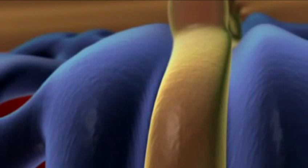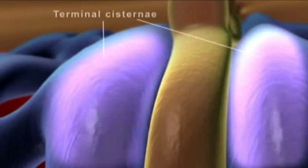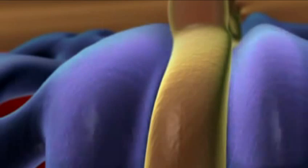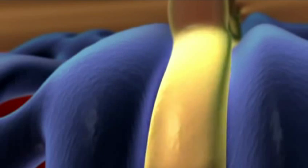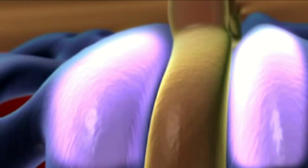Where it abuts the T-tubule, the SR forms sac-like bulges called terminal cisternae. One portion of a T-tubule plus two adjacent terminal cisternae is known as a triad.